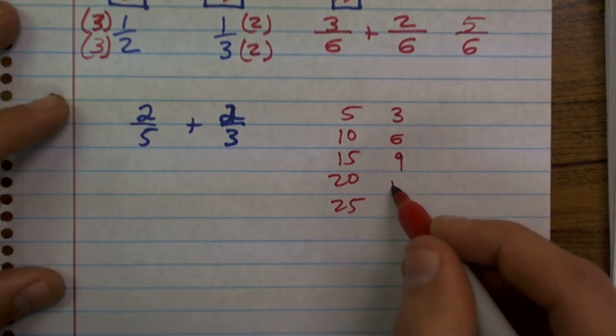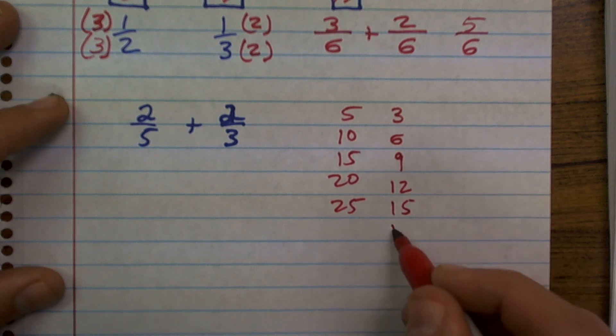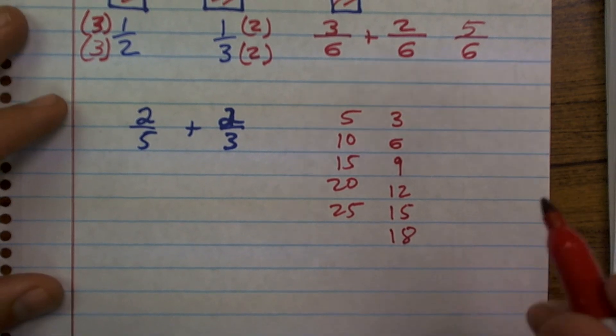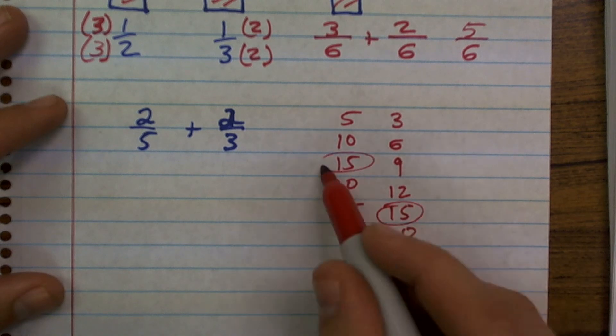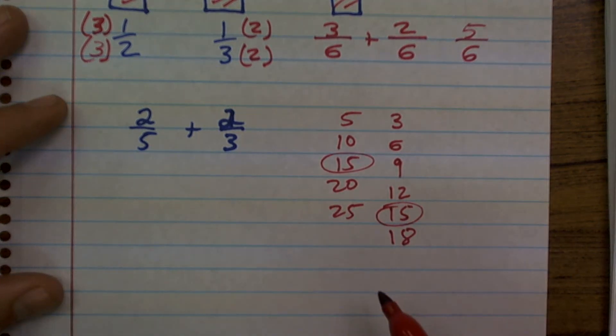3, 6, 9, 12, 15, 18. So what you notice is that 15 is going to be my common multiple.